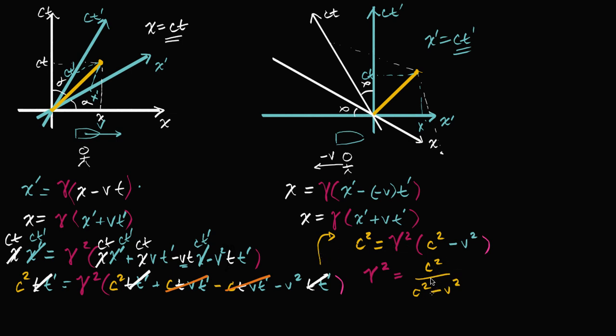Now if we like, we can divide the numerator and the denominator by c squared, in which case this will be equal to one over c squared divided by c squared is one, and then v squared divided by c squared. And we are in the home stretch now, we can just take the square root of both sides. We get gamma is equal to one over the square root of one minus v squared over c squared.